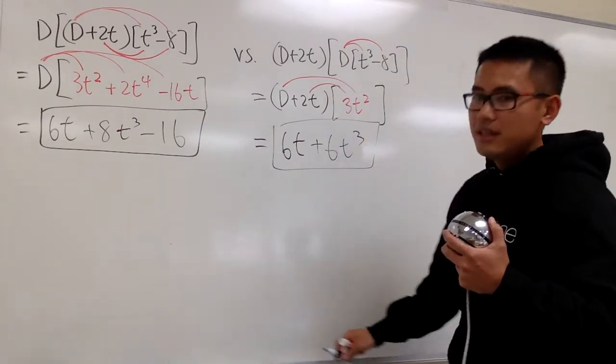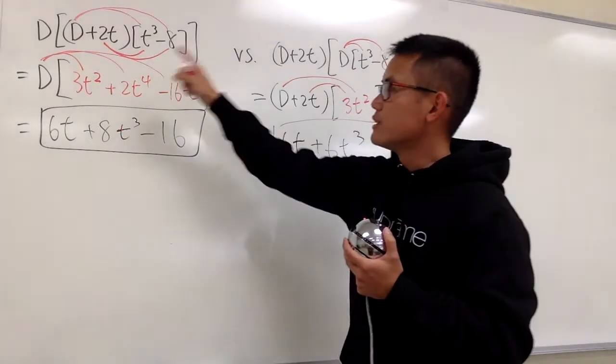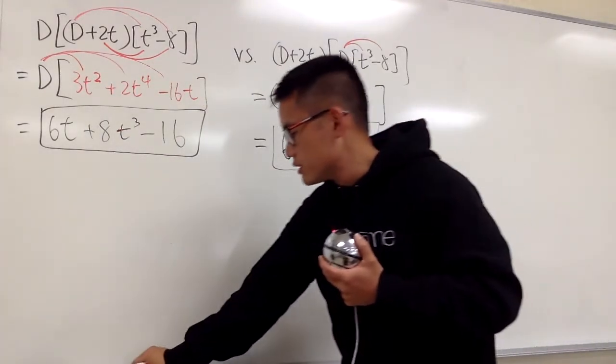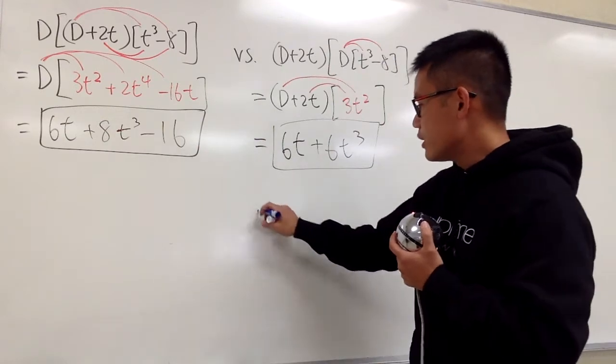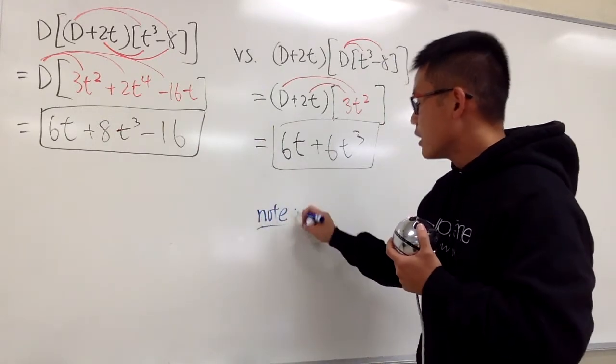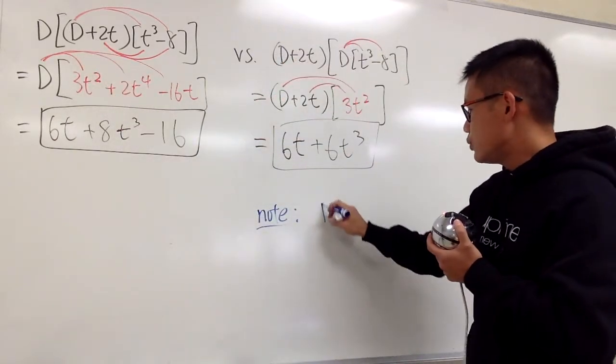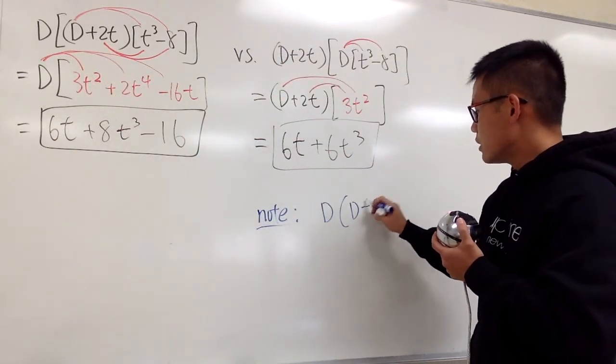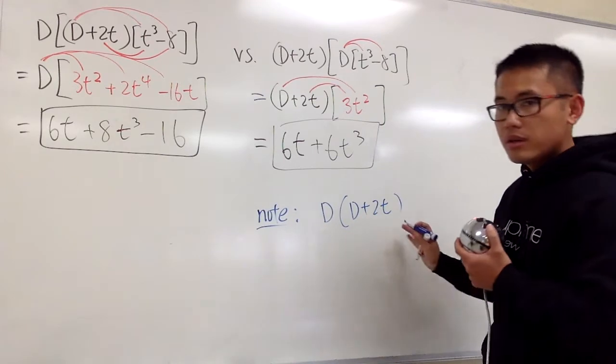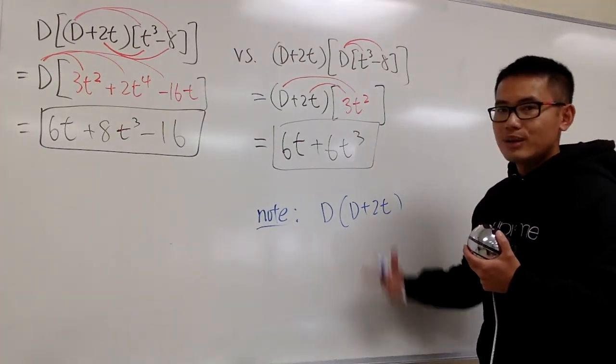As you can see, all we did with the first and second one is switch the order. The note I want to make is that if you look at D times (D plus 2T) in this order, you have to apply the inside operator first because you do this inside out.